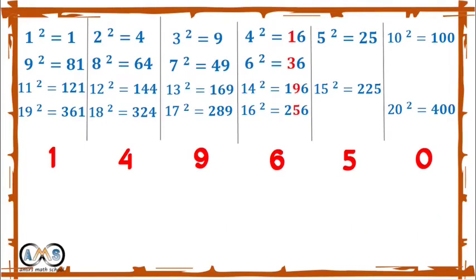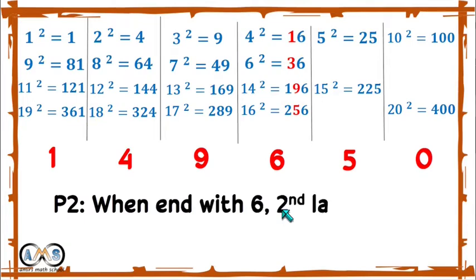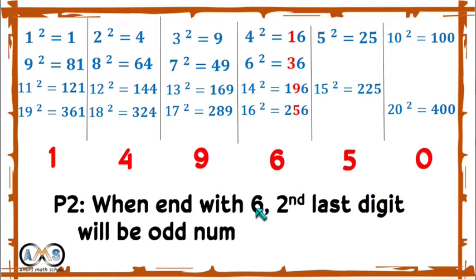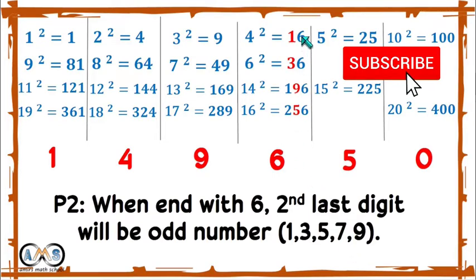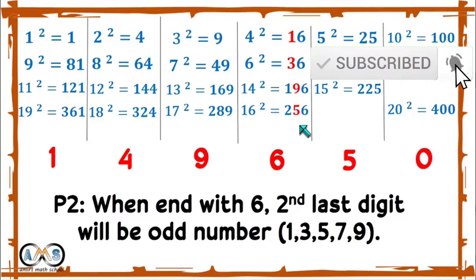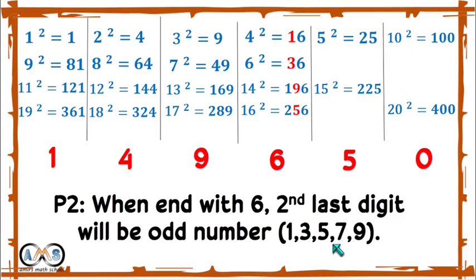When a perfect square number ends with 6, the second last digit will be an odd number — that is, 1, 3, 5, 7, or 9. When the perfect square number ends with 6, the second last digit will be an odd number: either 1, 3, 5, 7, or 9.